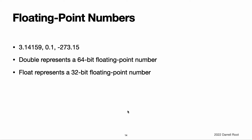Floating point numbers are numbers with a fractional component, such as 3.14159, 0.1, or negative 273.15. Floating point types can represent a much wider range of values than integer types and can store numbers that are much larger or smaller than can be stored in an Int. Swift provides two signed floating point number types. Double represents a 64-bit floating point number. Float represents a 32-bit floating point number. Double has a precision of at least 15 decimal digits, whereas the precision of Float can be as little as 6 decimal digits. In situations where either type would be appropriate, Double is preferred.